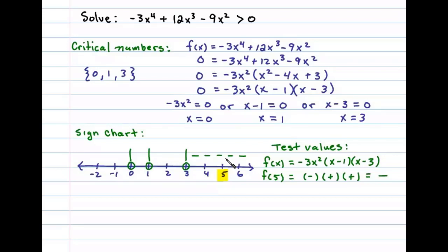Let's choose x = 2 and do the same thing. So f(2): -3 times 2² will leave us with a negative factor. 2 - 1 is 1, that's a positive factor. 2 - 3 will leave us with -1, or a negative factor. A negative times a positive times a negative will result in a positive number, so in that region we'll get positive results.